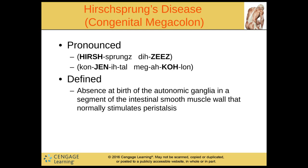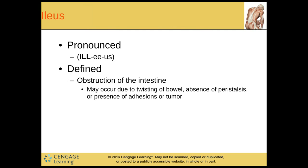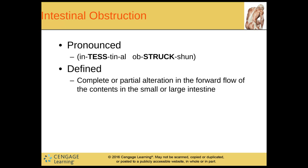Then we have Hirschsprung's disease, or congenital megacolon. This is defined as absence at birth of the autonomic ganglia in a segment of the intestinal smooth muscle wall that normally stimulates peristalsis. And we have ileus — this is the obstruction of the intestines, which may occur due to twisting of the bowel or a blockage of some sort, like a tumor. We have intestinal obstruction, which is the complete or partial alteration in the forward flow of the contents of the small and large intestine.